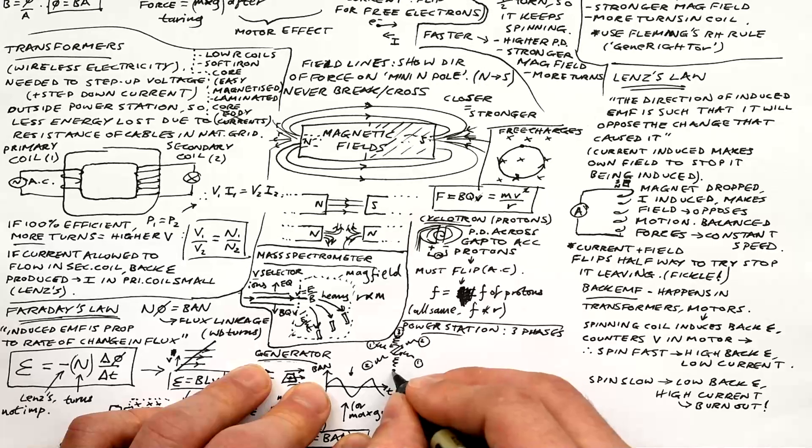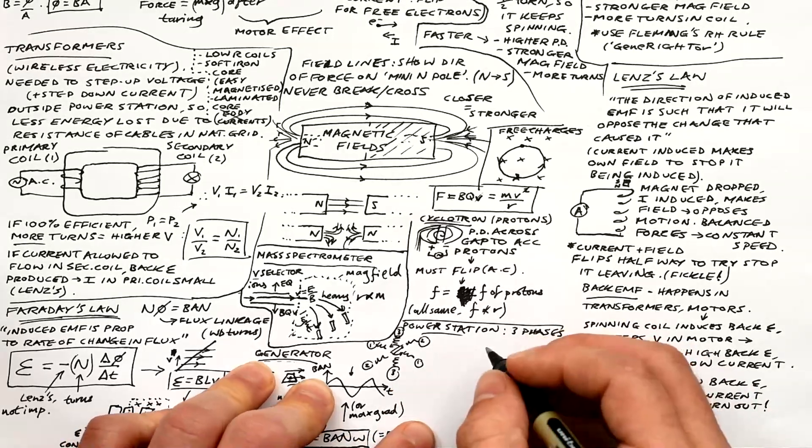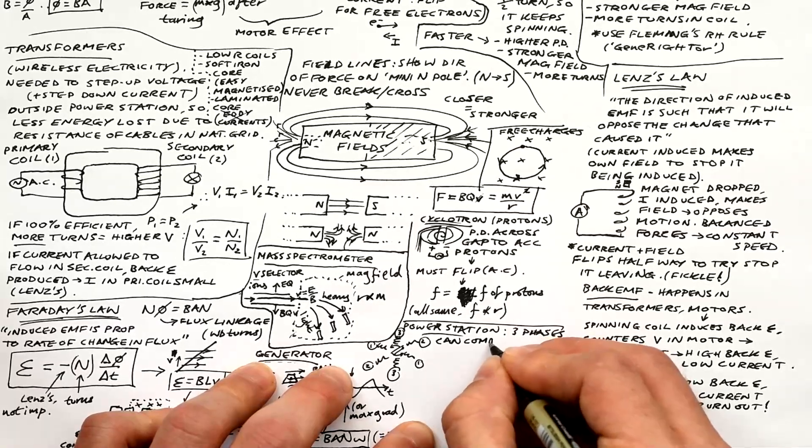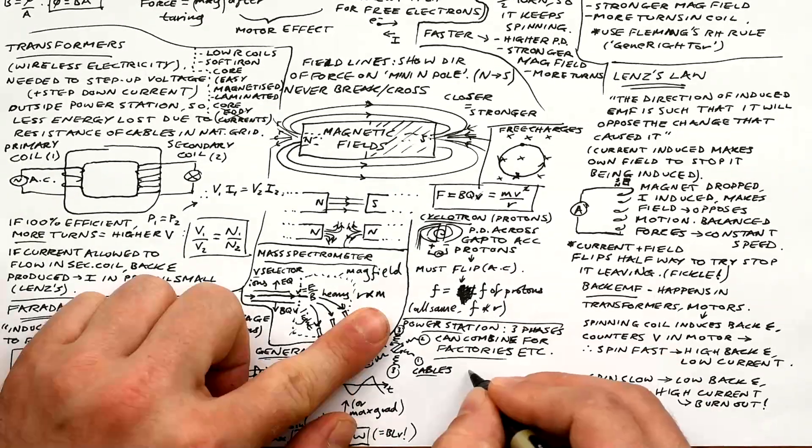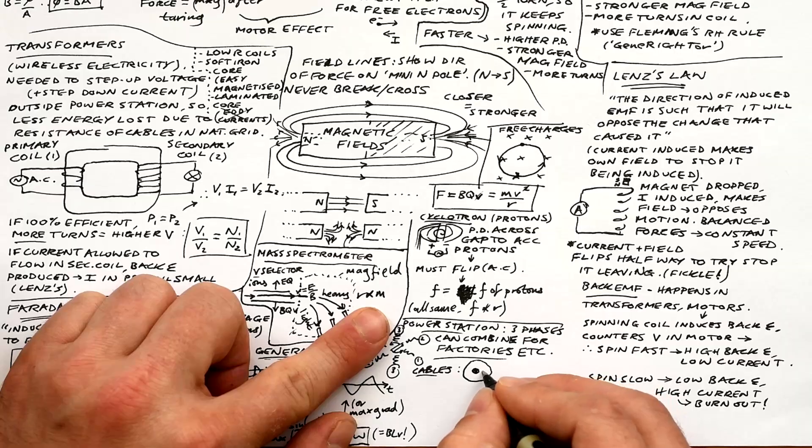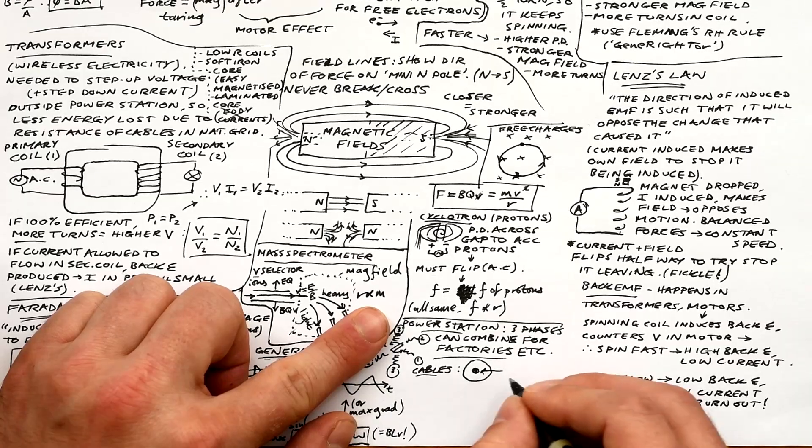Power station, it has a generator in, but actually the magnet is in the middle. Well, it's an electromagnet. And then we actually have three sets of coils or stators around the outside. That makes three currents that then go to the national grid. We call those three phases. Houses just use one phase, but factories can combine all three phases to get a really high voltage.